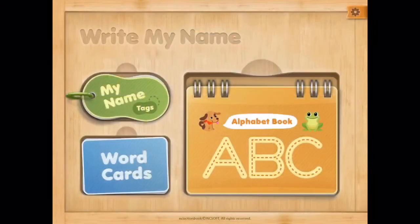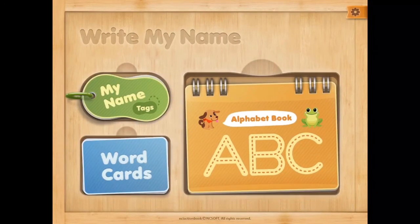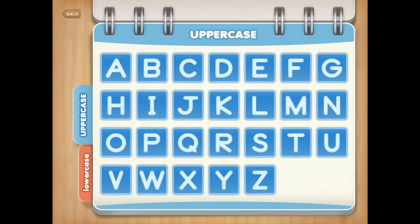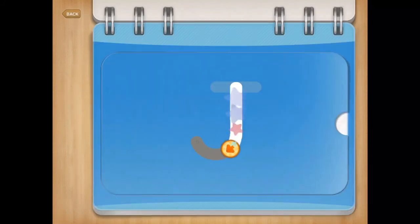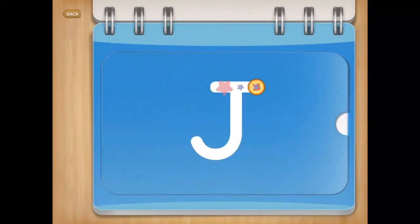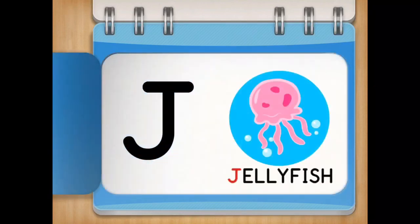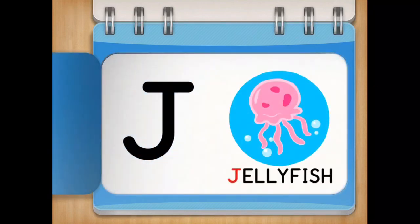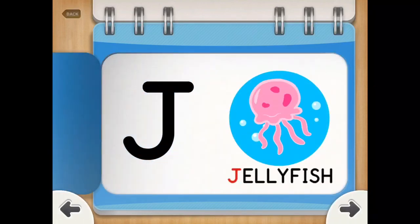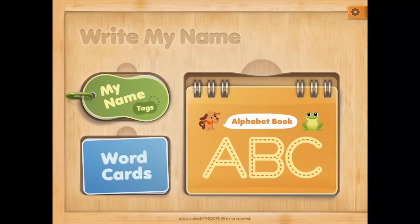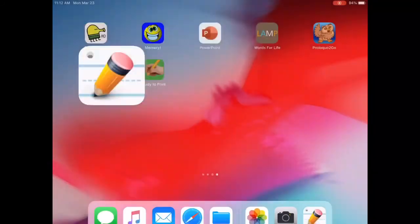The next thing is the alphabet book — this is a page of uppercase and lowercase letters. You can select a letter and they can trace it to get some practice. Again, you can do screenshots if you'd like, or just have them practice the letters. We would love copies of anything that you can get to us.